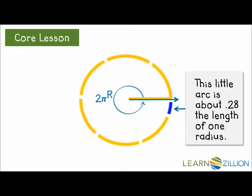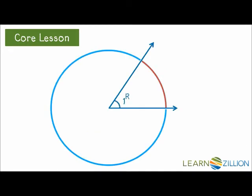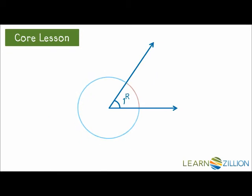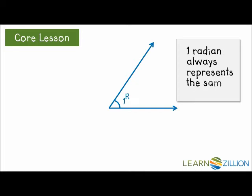Now watch this. One radian always subtends one radius. So no matter what size the circle is, one radian always represents the same angle.